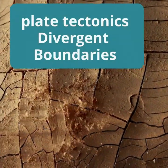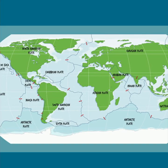Have you ever wondered how new land forms or why parts of the Earth slowly shift apart over time? The answer lies in divergent boundaries, where Earth's plates are moving away from each other.